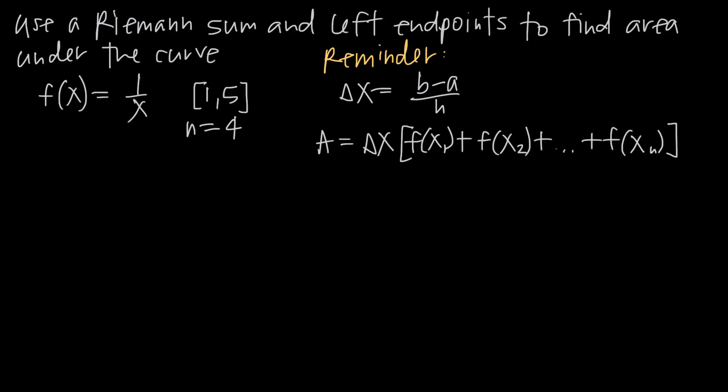In this video, we're talking about how to use a Riemann sum and left endpoints to find the area underneath the curve. A Riemann sum is just one technique we can use to approximate area under a curve before we learn how to use an integral or antiderivative to find the exact value. The curve we've been given is f(x) = 1/x, and we've been asked to find the area underneath this curve and above the x-axis over the interval x = 1 to x = 5.